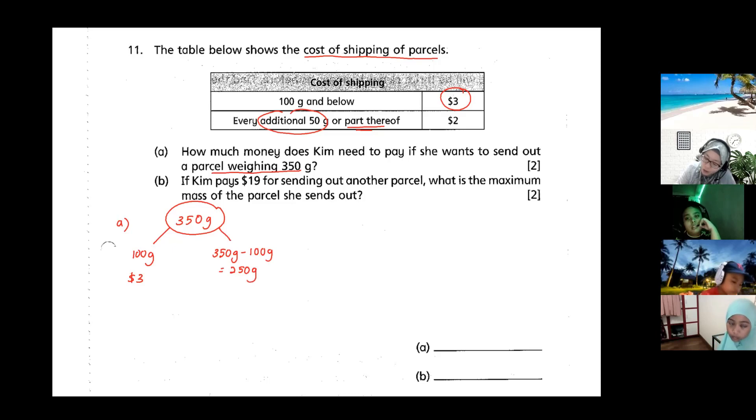So for this 250 gram, you must ask yourself how many 50 grams are there inside 250. So you take 250 divided by 50 grams, so there are five, five times of two dollars. In this case, five times two dollars equals to ten, so for 350 grams she needs to pay ten plus three dollars equals to thirteen dollars.